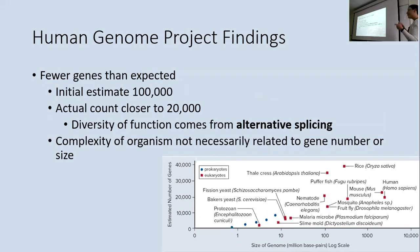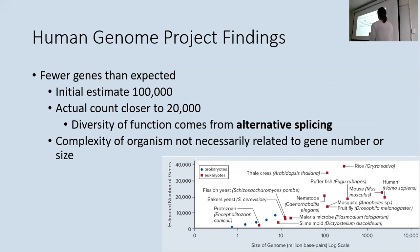We actually already know why this is, though they did not at the time. This diversity of function from relatively few genes comes from alternative splicing — eukaryotes have 20,000 genes but can mix and match each one to make several different things. So you come to the conclusion that the complexity of an organism is not necessarily related to the number of genes or even the size of the genome. There are organisms with a lot more genes than us and organisms with much larger genomes.